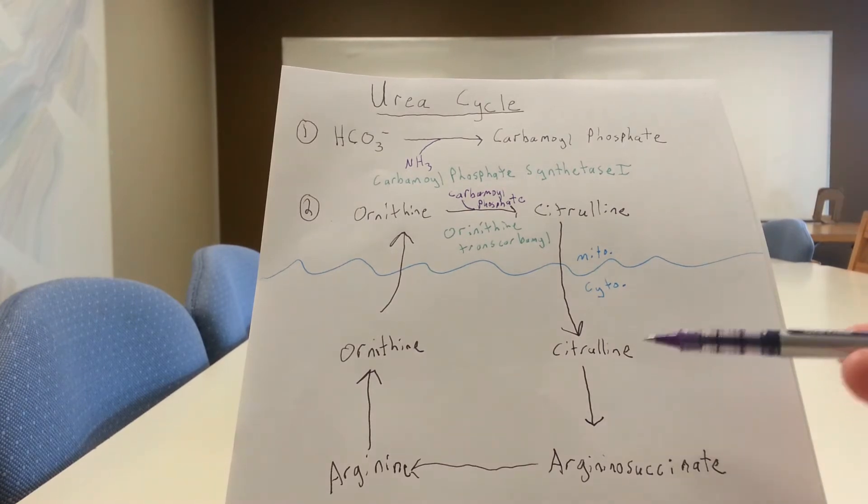And then citrulline over here. Citrulline comes from citrullus, which is for watermelons. Citrullus is watermelon in Latin, and that's where they derived citrulline from, was from a watermelon.